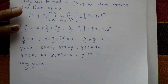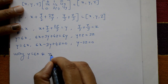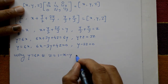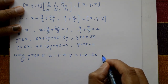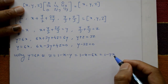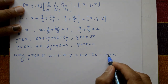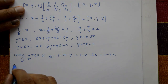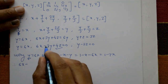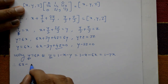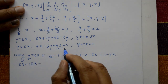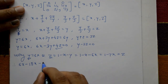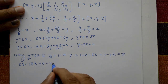Using x + y + z = 1 and y = 6x, we get z = 1 minus x minus y = 1 minus x minus 6x = 1 minus 7x. Substituting y = 6x and z = 1 minus 7x into the second equation: 6x minus 3·(6x) + 4·(1 minus 7x) = 0, giving 6x minus 18x plus 4 minus 28x = 0.